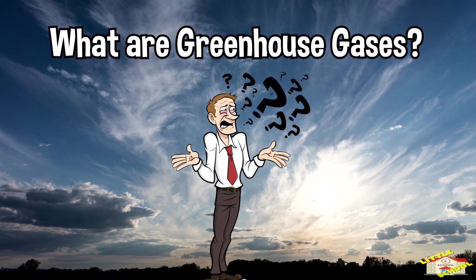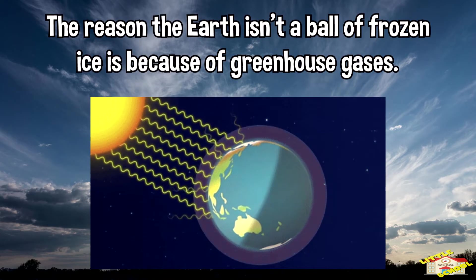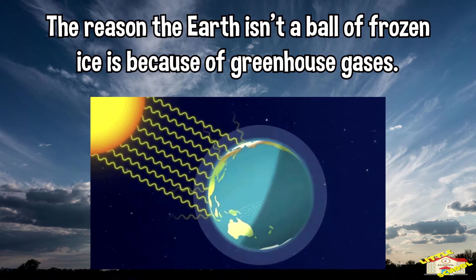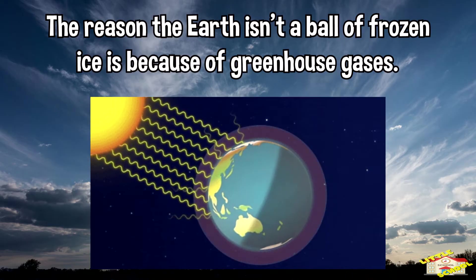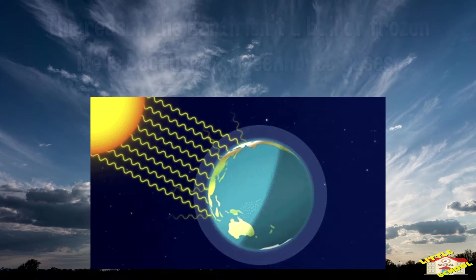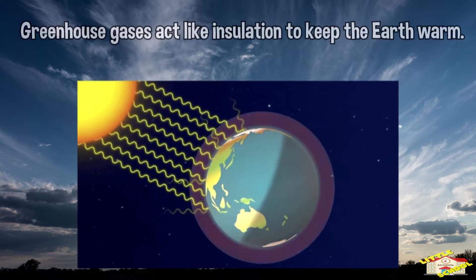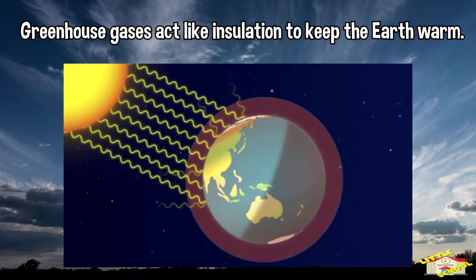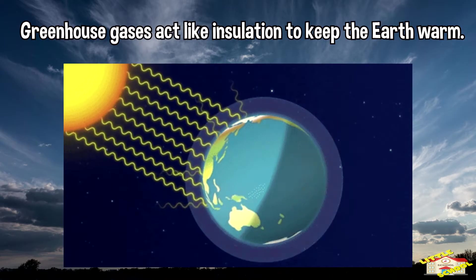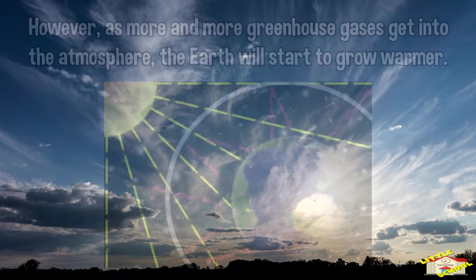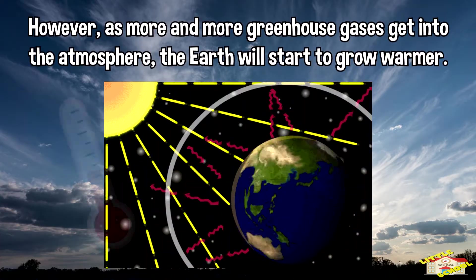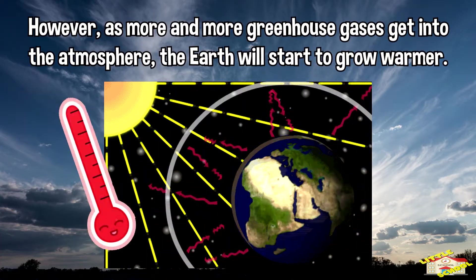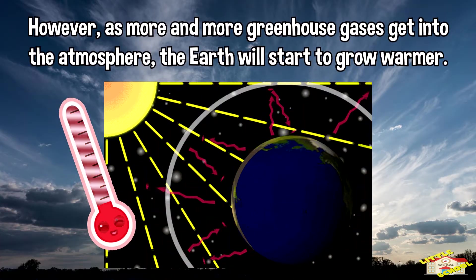What are greenhouse gases? The reason the Earth isn't a ball of frozen ice is because of greenhouse gases. Greenhouse gases act like insulation to keep the Earth warm. However, as more and more greenhouse gases get into the atmosphere, the Earth will start to grow warmer.